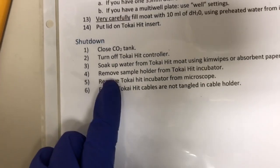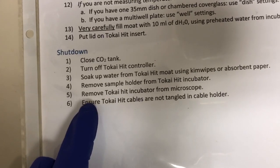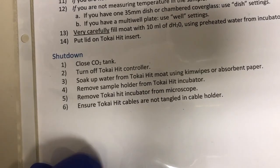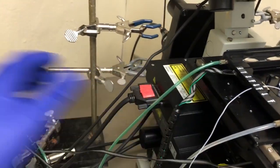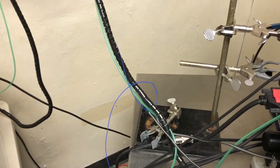Then you want to remove the sample holder from the Tokai Hit incubator, the incubator from the microscope, and then ensure that the Tokai Hit cables are not tangled in the cable holder. So when you remove all of this stuff, just make sure that all these cables don't end up completely knotted up.